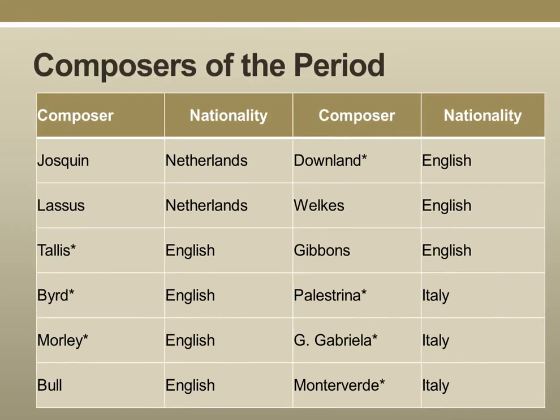There are many composers of this period, but the ones with the asterisks are the most famous — people like Talos, Byrd, Morley, Palestrina, Gabrieli, and Monteverdi. The reason is mainly because their manuscripts have survived over time and there's actually a record of these people and their actual music.